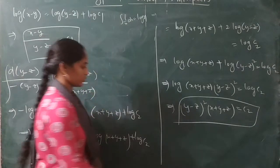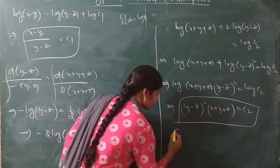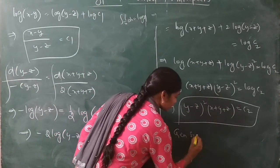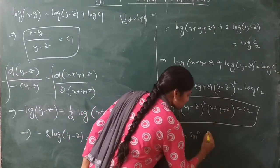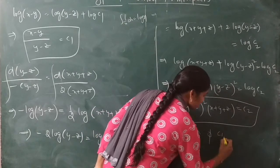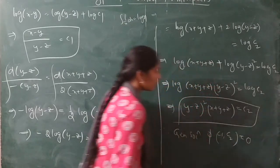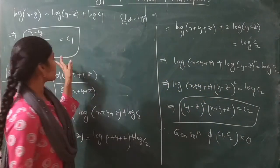So the general solution is φ(C1, C2) = 0, where C1 = (x−y)/(y−z) and C2 = (y−z)²(x+y+z).